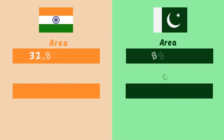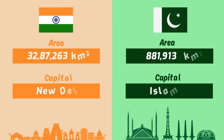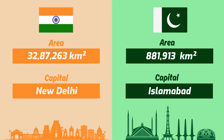Total area of Pakistan is 881,913 kilometer per square and the capital is Islamabad, while total area of India is 3,287,263 kilometer per square and the capital is New Delhi.